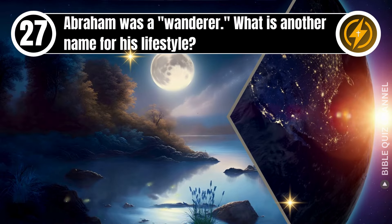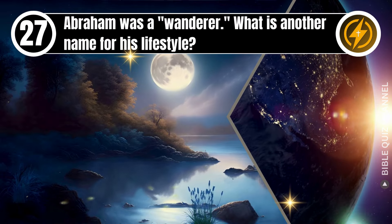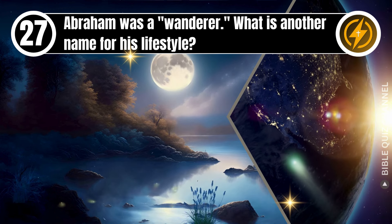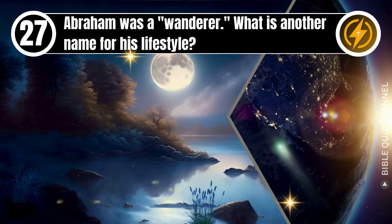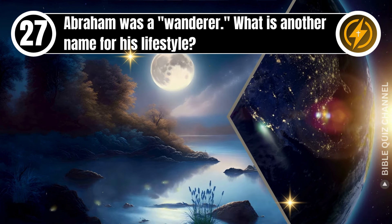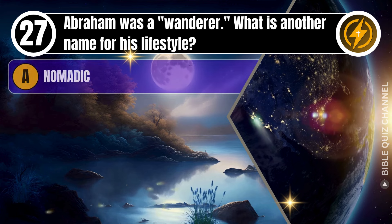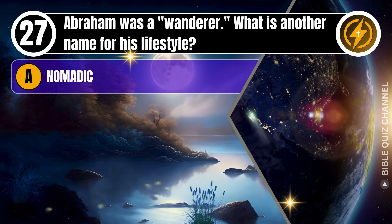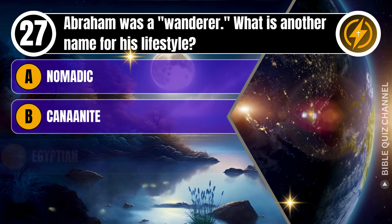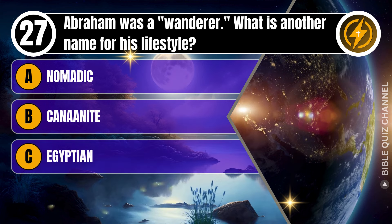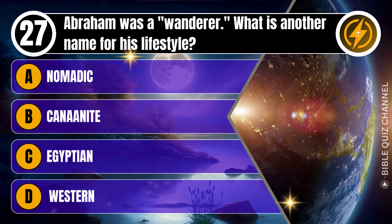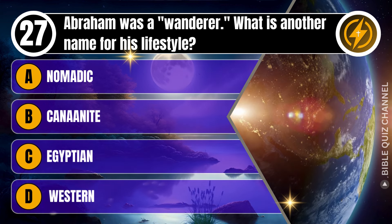Question 27. Abraham was a wanderer. What is another name for his lifestyle? A. Nomadic. B. Canaanite. C. Egyptian. D. Western. You get 10 seconds.